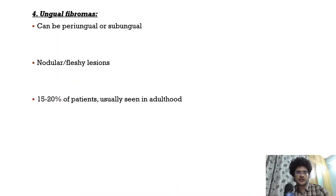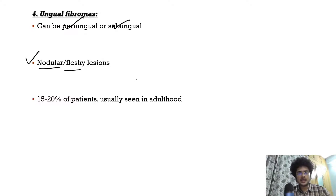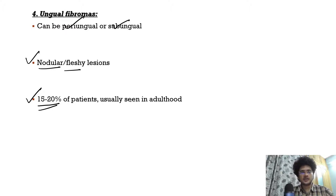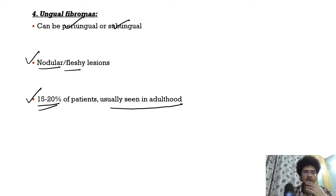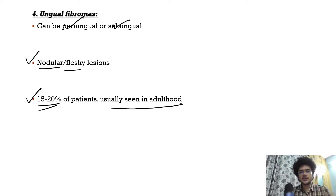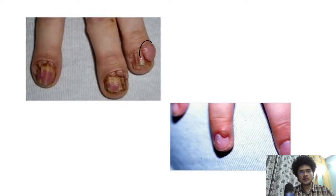Ungual fibromas can be periungual or subungual, and are classically nodular or fleshy in appearance. They are much less common — seen in only 15 to 20% of patients — and present in adults. The cutaneous manifestation presenting very early is ash leaf macules; other cutaneous manifestations tend to present later.